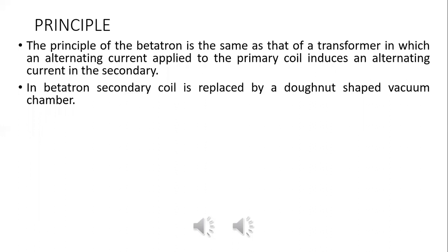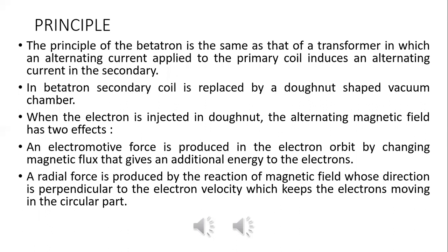When you apply the magnetic field, there are two effects on the electron in the doughnut. One effect is that it will produce an electromotive force on the electron according to Faraday's laws of electromagnetic induction. The second effect is that the magnetic field will force it to move in a circular path.